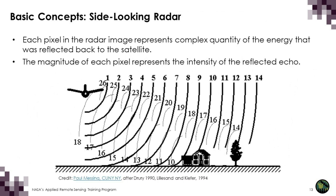A radar transmits short bursts or pulses of microwave energy at regular intervals, and the radar beam illuminates the surface obliquely at a right angle to the motion of the platform. The antenna receives the portion of the transmitted energy reflected — backscattered — from various objects within the illuminated beam. By measuring the time delay between transmission and reception of the backscattered echo, the distance and location of targets on the ground can be determined. As the sensor platform moves forward, processing of the backscattered signals builds up a two-dimensional image of the surface.